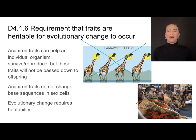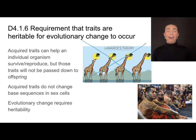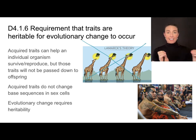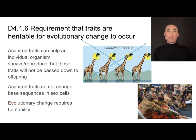Evolutionary change requires heritability. To put it in human terms: you may acquire a trait like a tattoo that gives you an advantage in survival or reproduction, but if you were to reproduce, your offspring would not have that tattoo. Evolutionary change happens on a population level, not an individual level, and so fitness must relate back to our genes and to heritability.